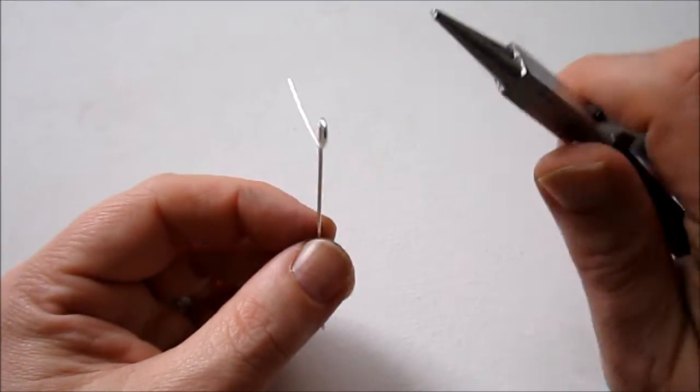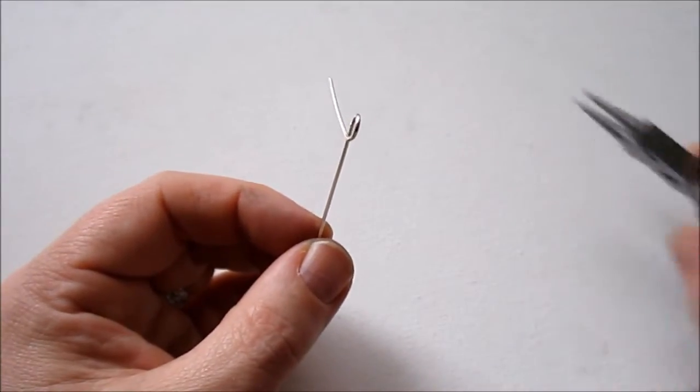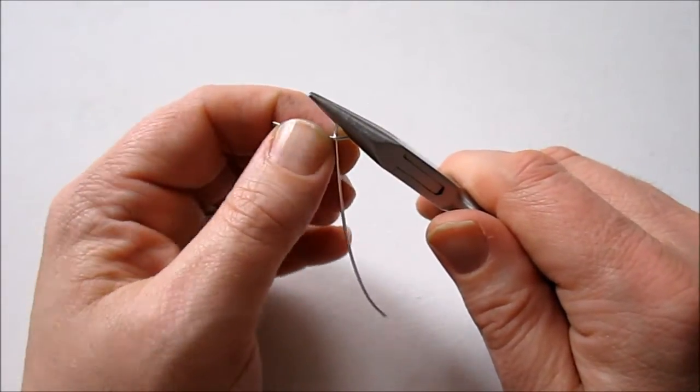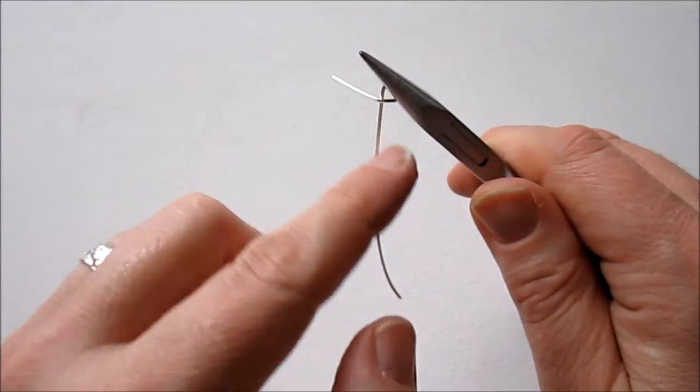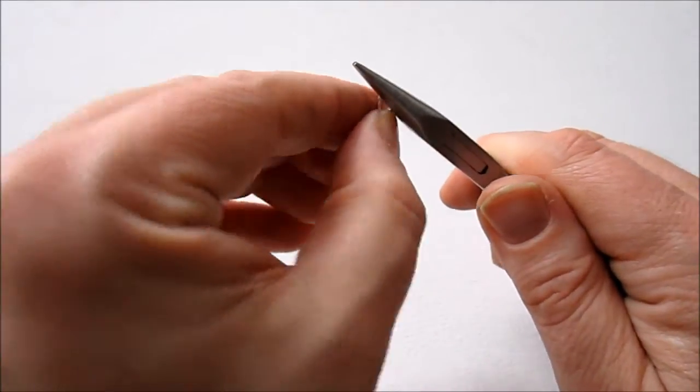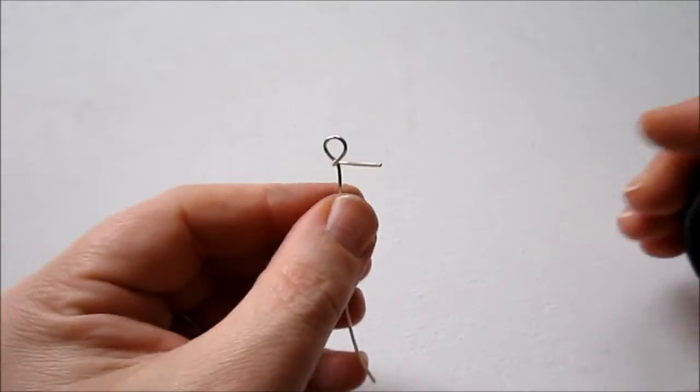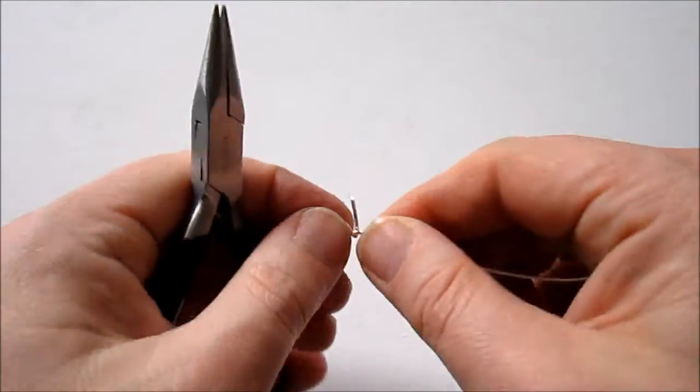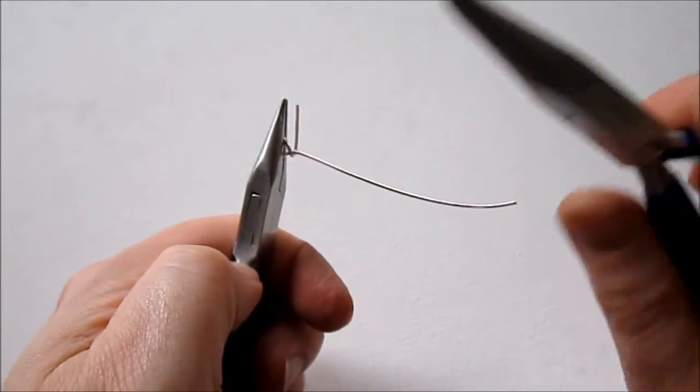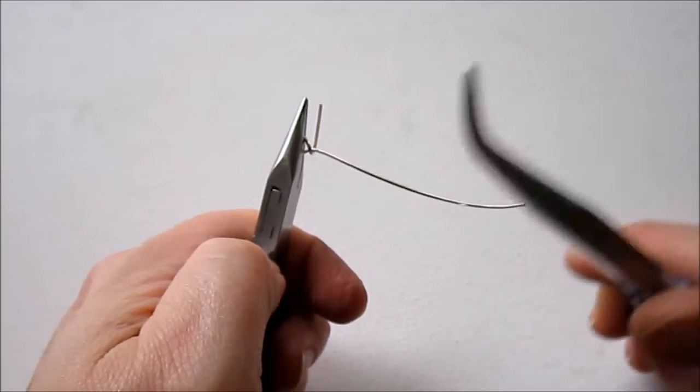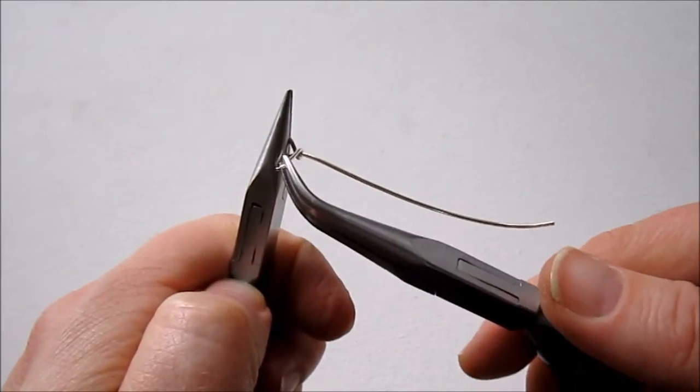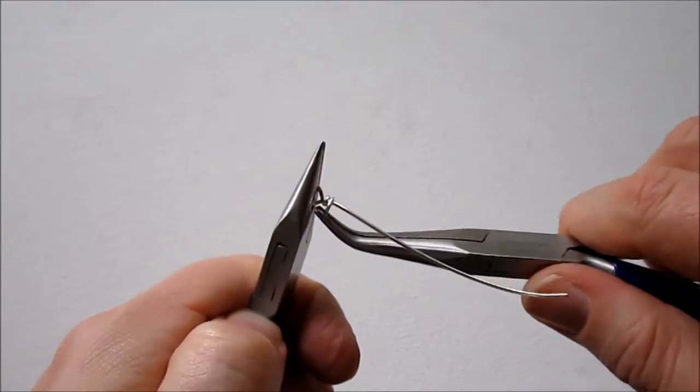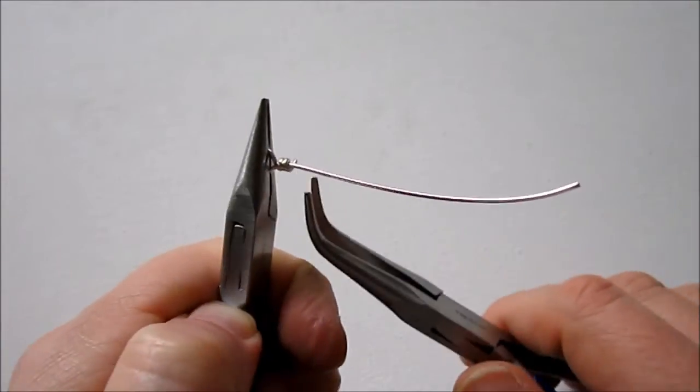And we're just going to wrap the wire around the pliers. So we have a loop. And this loop is not centered how you would like it on the top of the loop. But I'll show you what I do. I grab my chain nose pliers. And then as I make the first wrap around this with the short wire around the long wire, I pull the long wire straight.